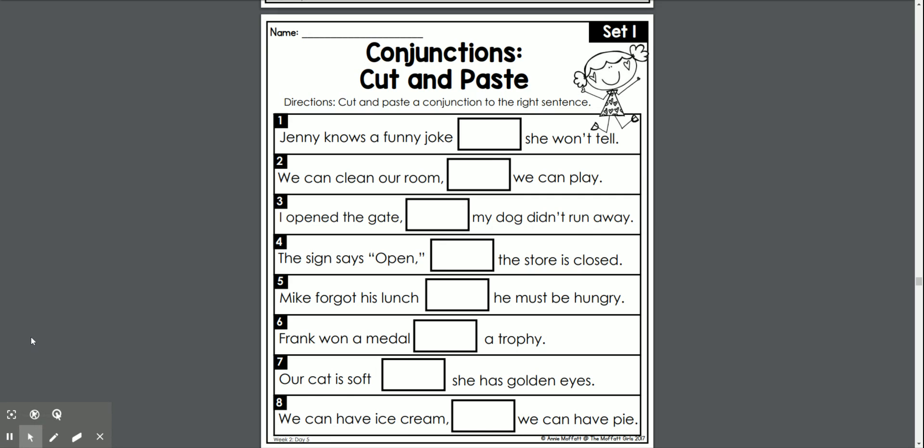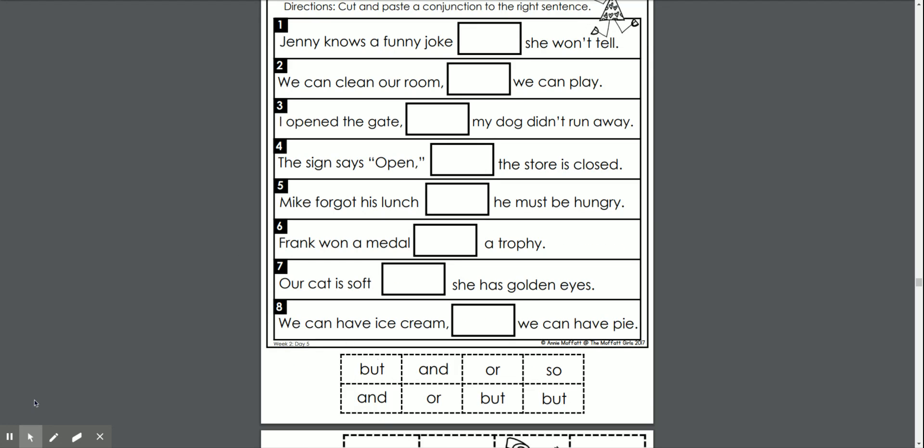Okay. All right, so we're going to go ahead and at the bottom, you're going to have scissors and you're going to cut out your conjunctions. So we have but, and, or, so, and, or, but, and, but. Okay.